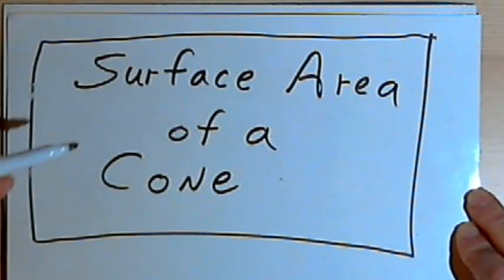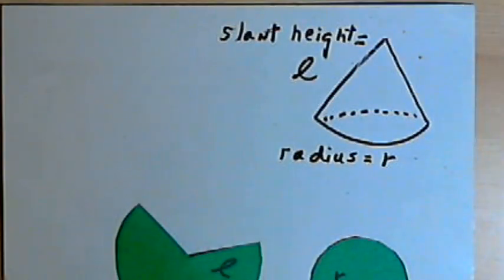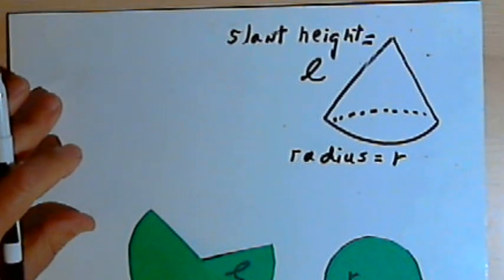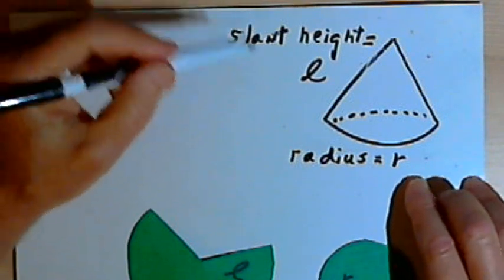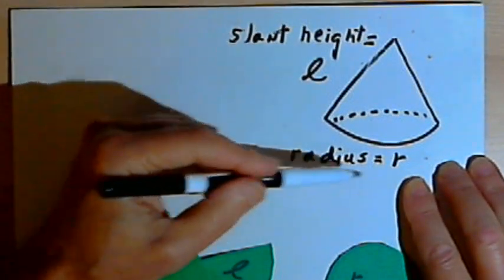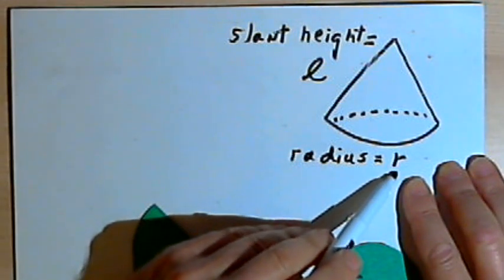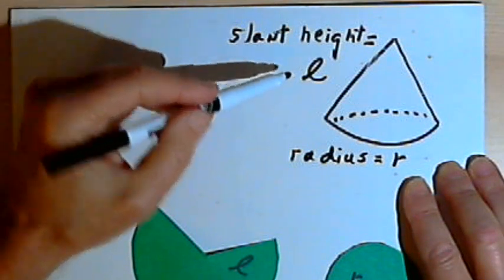One where we're given what's called the slant height of the cone, and another where we're not given it. So let's get started. I've drawn a picture of a cone here, and I've labeled the two dimensions that we're very often given. One is going to be the radius of the cone. We're going to use an R for radius.